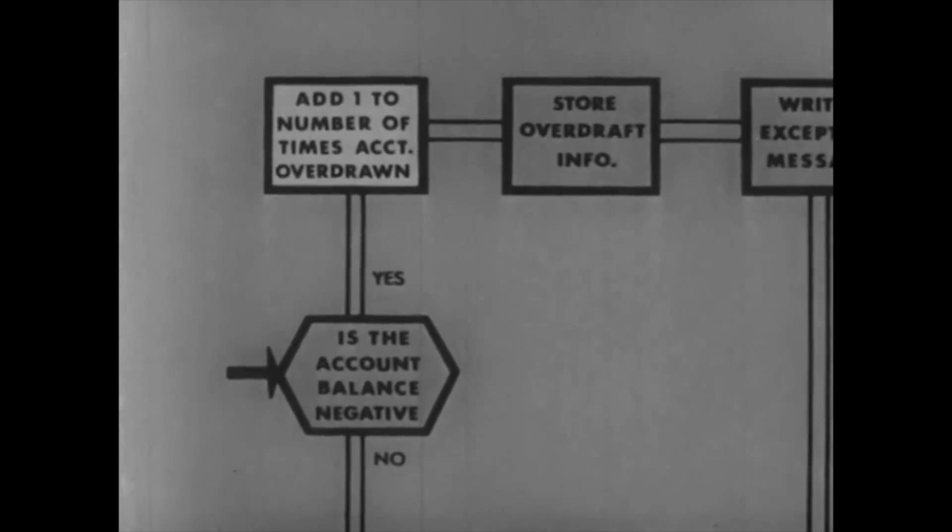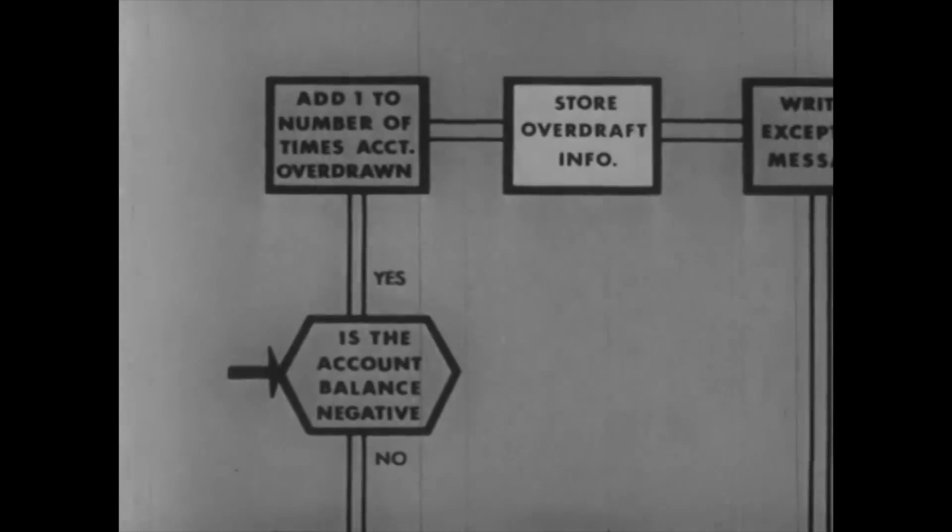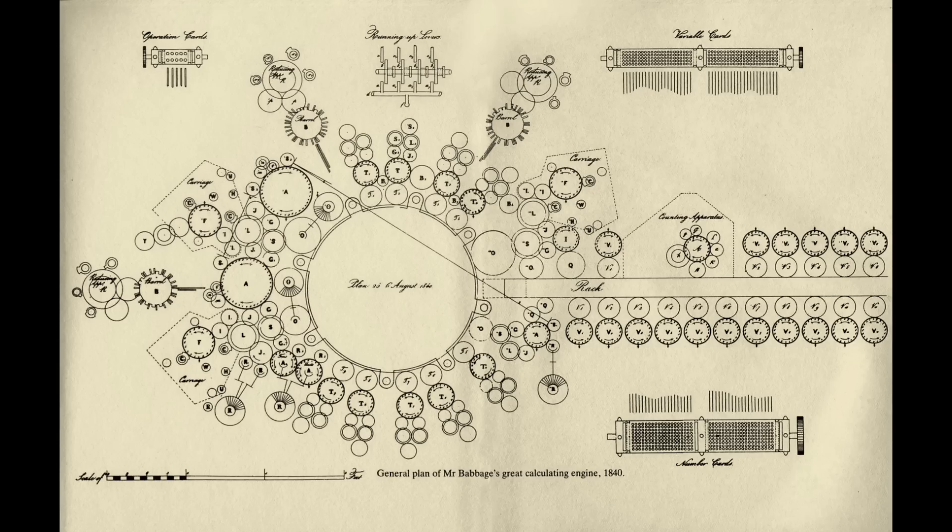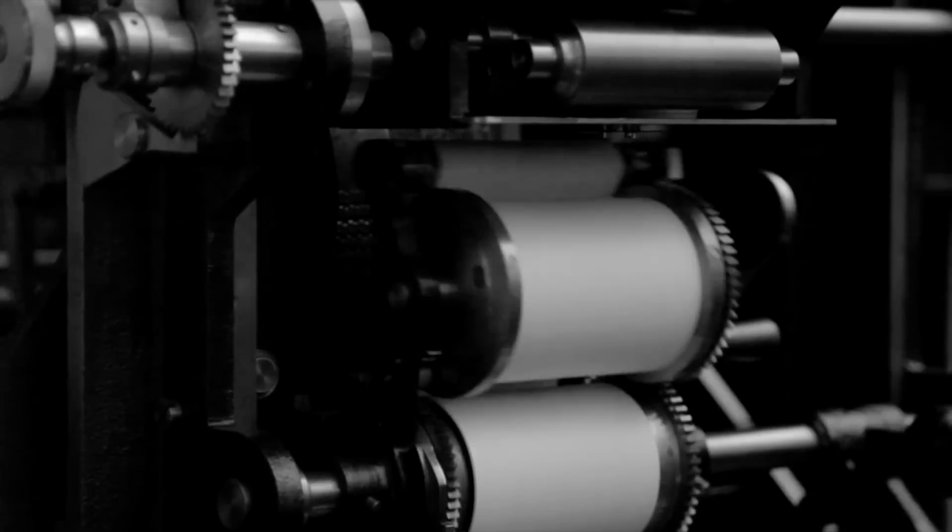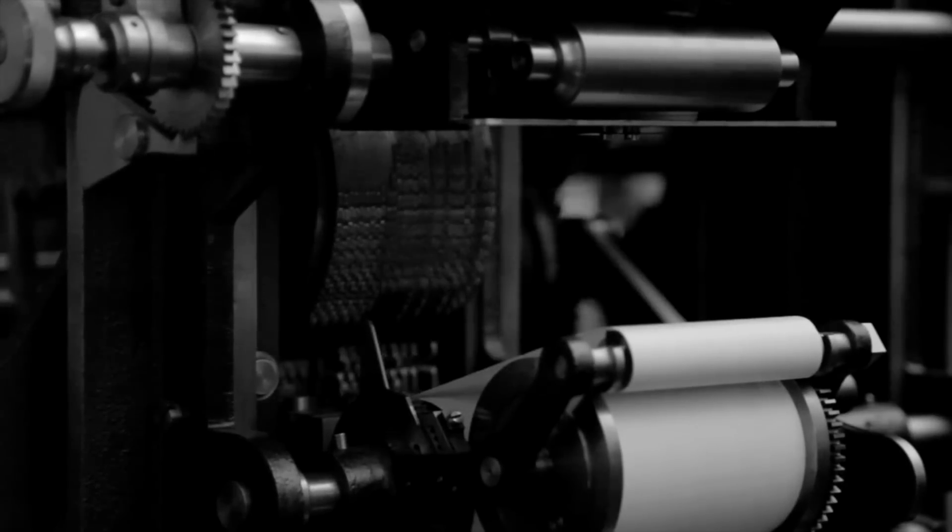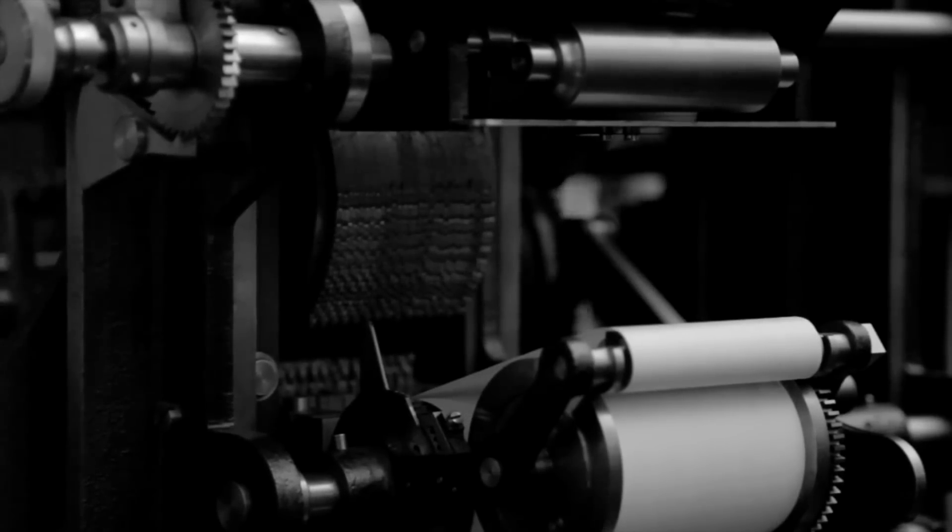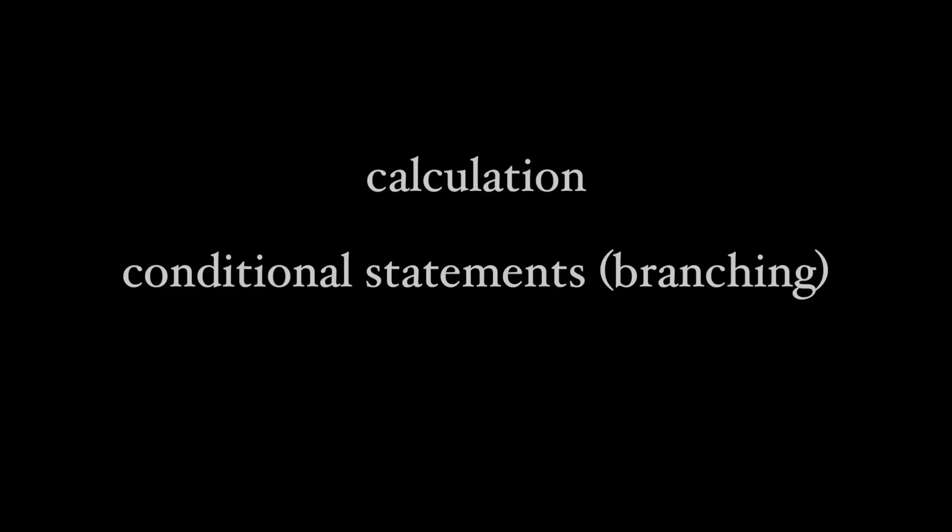Lastly, the machine needed to be able to remember intermediate values during computation. So he included a memory, which could hold 100 40-digit numbers. And it would output the results on a roll, just as his difference engine did. And with that calculation, branching, and memory, he had everything he needed for the machine to follow any algorithm you can think of.